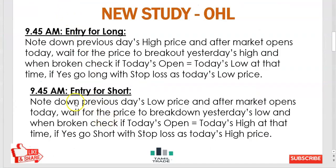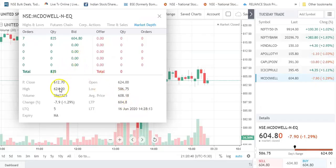Note down the previous day's low price. After the market opens, wait for the price to break down yesterday's low. When broken, check if today's open — MCTOWL market path is open. Today's open is high, which means market path is uptrend. But the particular share is in a downtrend. So we have both cases with today's high.